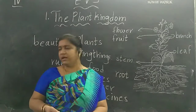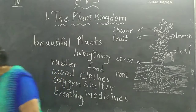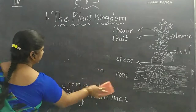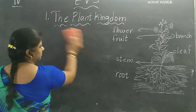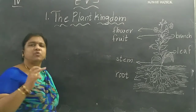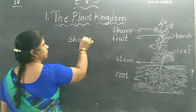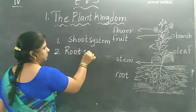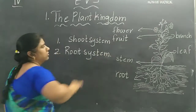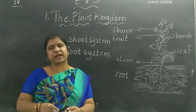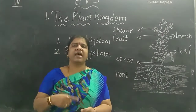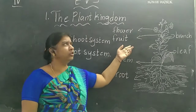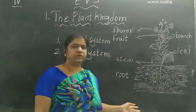There are certain parts of a plant. The plant body consists of two basic parts. From these we can see stem, fruit, flower, branch, leaf, and roots.